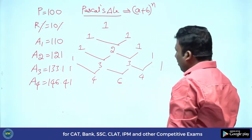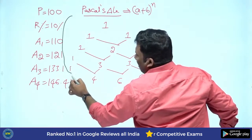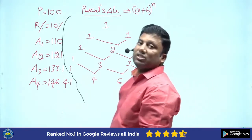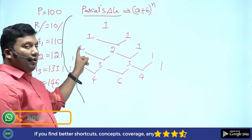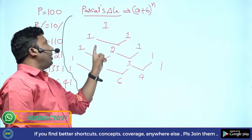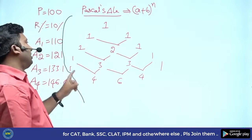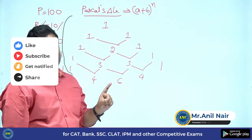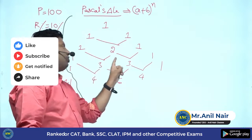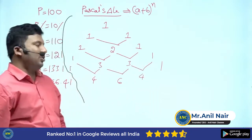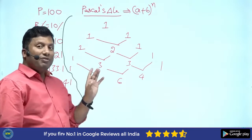If you observe closely, this is nothing but the coefficients of (a + b) power n. (a + b) whole square is a squared plus 2ab plus b squared. This is (a + b) power 3: a cubed, 3a squared b, 3ab squared, and b cubed.